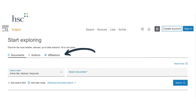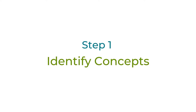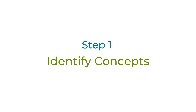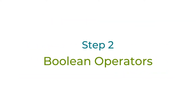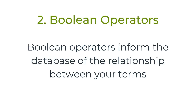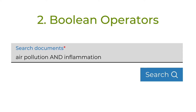Let's start with a document search. Many of the skills you use to search in other databases can be applied to Scopus, but let's do a quick refresher. First, identify your concepts. If you wanted to learn more about the effects of air pollution on inflammation levels in the body, your main concepts would be air pollution and inflammation. Second, consider Boolean operators—think about what relationships you want between your concepts. I want Scopus to retrieve every paper that discusses both air pollution and inflammation, so I'll use the Boolean operator AND between my concepts.